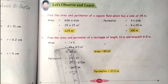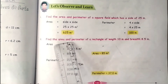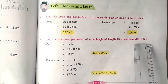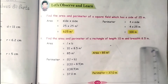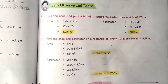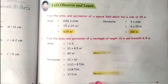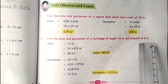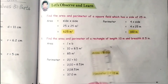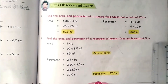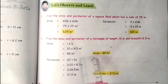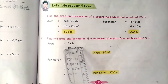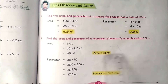Now see the second example. Find the area and perimeter of a rectangle of length 10 metres and breadth 8.5 metres. The formula for area is length into breadth. They have given length and breadth values, so we multiply: 10 into 8.5 square metres, which gives 85 square metres.